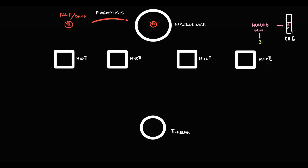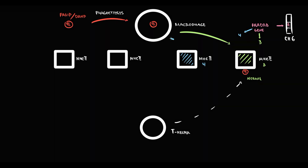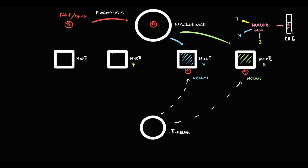For example, if a person has the HLA-DRB3 allele, their MHC-2 receptor presents particles in a perfectly normal way, and T-helpers recognize the particle as a normal substance, so no danger is perceived. If a person has the HLA-DRB4 allele, MHC-2 also presents particles normally, and there will be no inflammatory response. Similarly, if a person has the HLA-DRB7 allele, the MHC-2 receptor presents particles in a perfectly normal way and there is no inflammatory response.